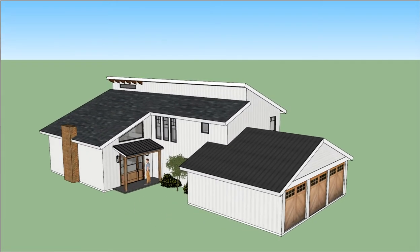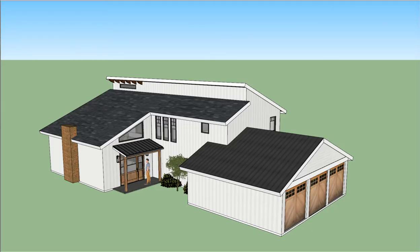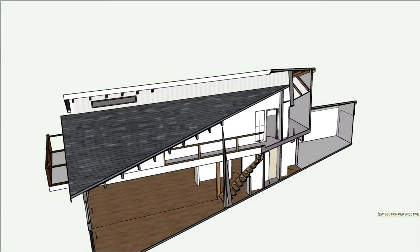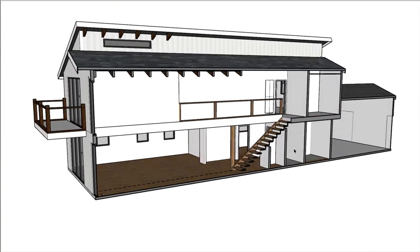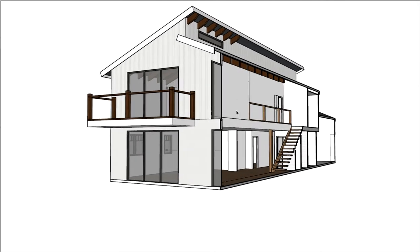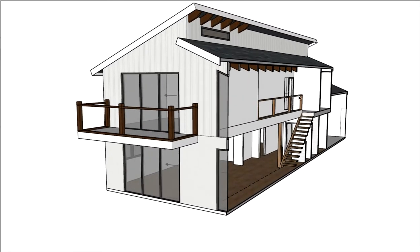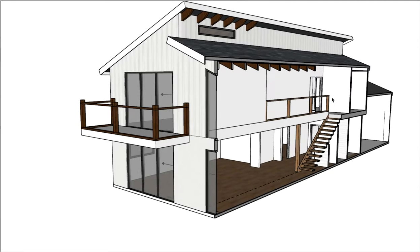So let's look at this section first — the east-west section looking north at the balcony. This is cut through the stair and the living room and the garage. You can see we're through the stair out in front of the balcony of the new partition that separates the master bedroom from the open living room space. We've got the mezzanine hallway with a railing up there.